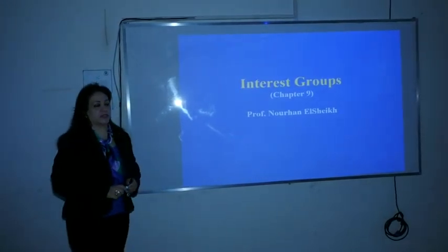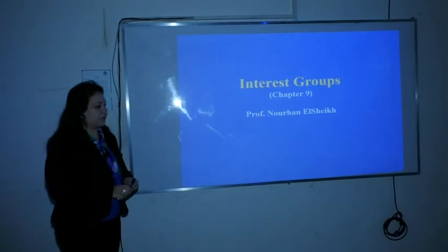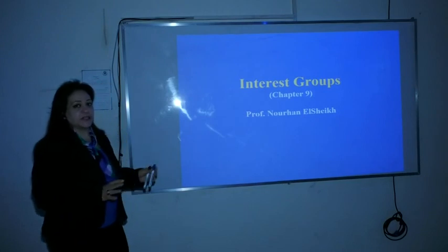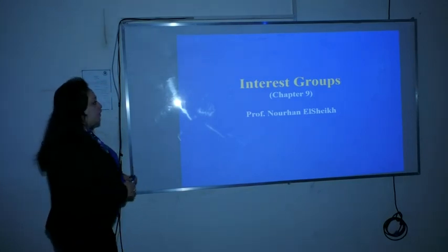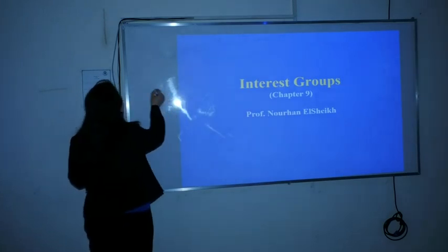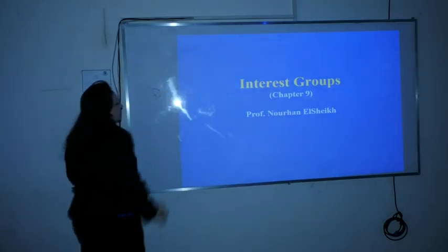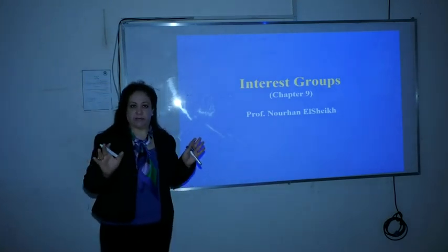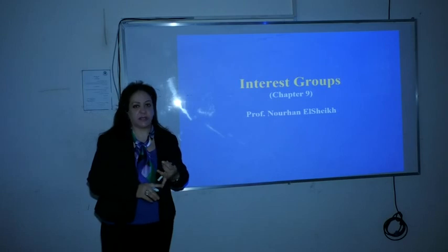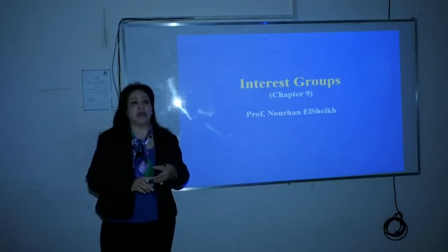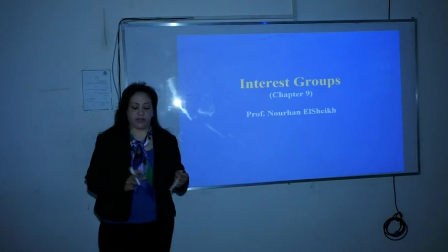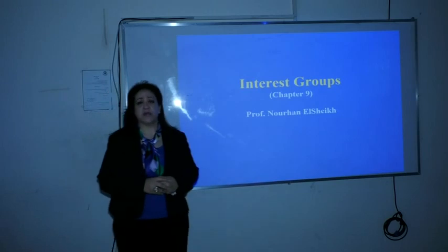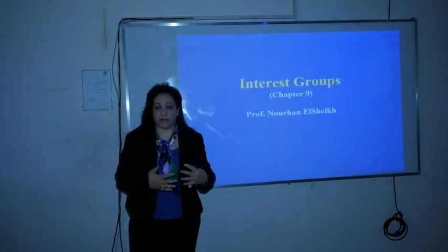We started this course discussing the political system, and we mentioned in our definition that it is a set of institutions. We differentiated between formal and informal institutions. Formal institutions include three main ones: executive, legislature, and judiciary. We covered that set of formal institutions and also the relations between them.